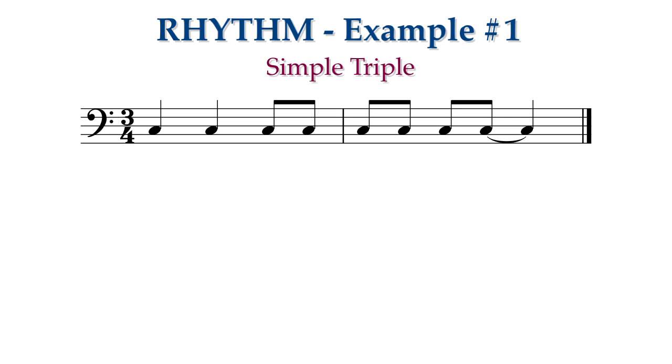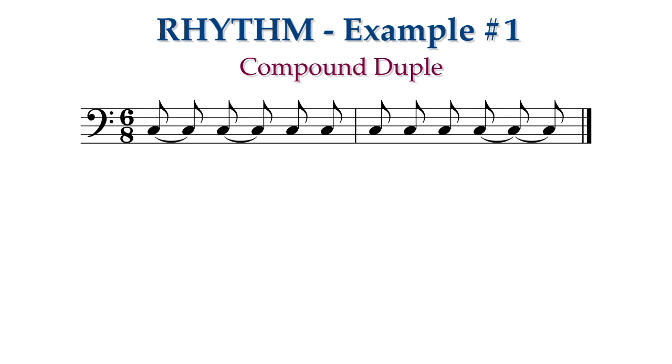Now let's see what this pattern of durations looks like in compound duple meter, six-eight time. Now there are three eighth notes in each beat, and the dotted quarter note gets the beat. Bracket the eighth notes into groups of three, two groups in a measure. Use the same beaming and tying rules.